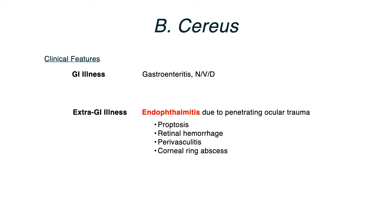Something comes in and touches the eye, and then you get endophthalmitis. Symptoms that you would see here would be proptosis, retinal hemorrhage, perivasculitis, and a corneal ring abscess. Obviously, this is lower yield than the GI stuff, but just keep this in the back pocket if you really want to impress people.